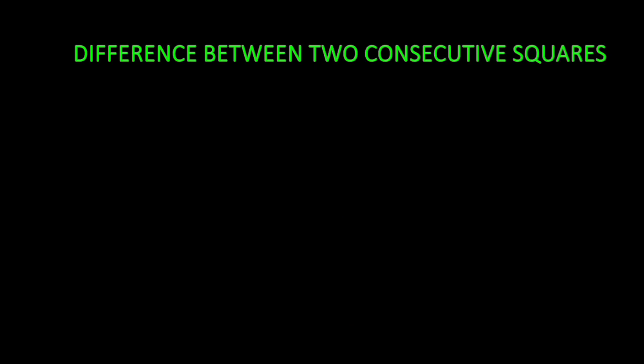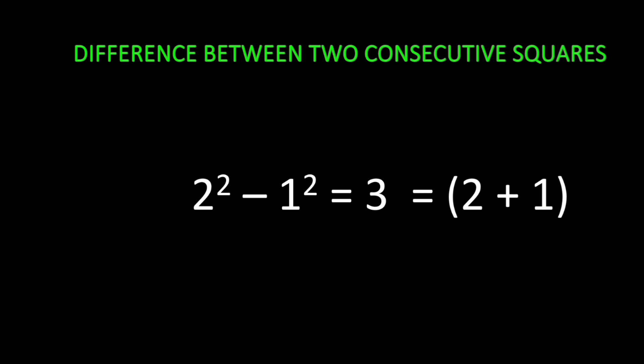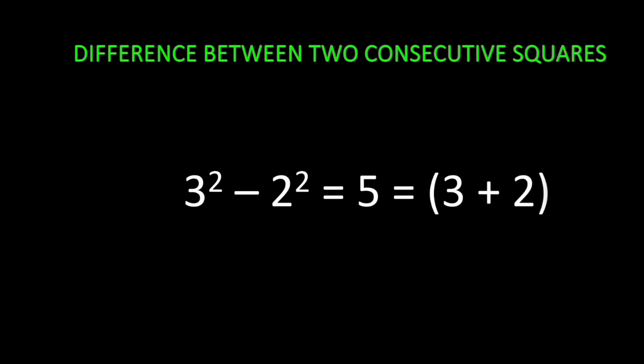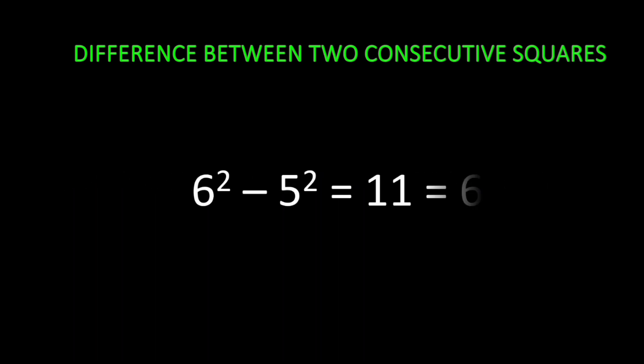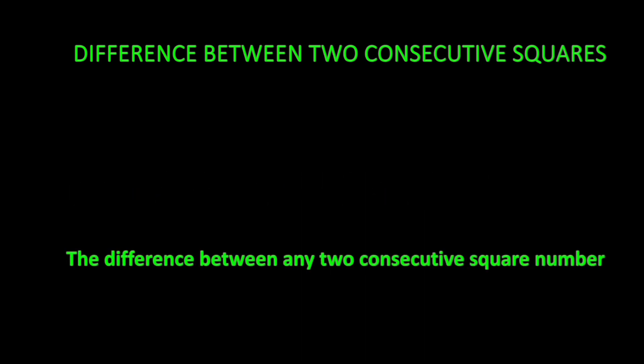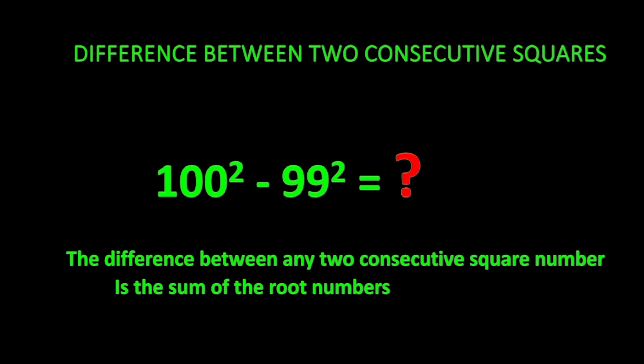Next: the difference between two consecutive square numbers. You do not need to compute the squares and subtract — just add the root numbers. 2² minus 1² equals 2 plus 1 equals 3. 3² minus 2² equals 3 plus 2 equals 5. 6² minus 5² equals 6 plus 5 equals 11. The difference between any two consecutive square numbers is simply the sum of the root numbers. Can you find 100² minus 99²?